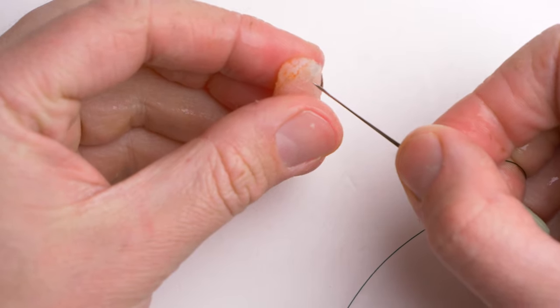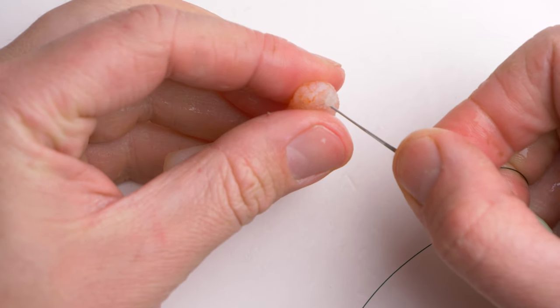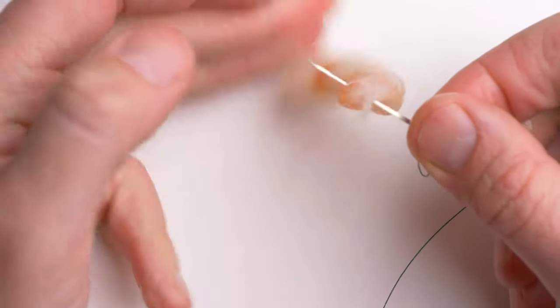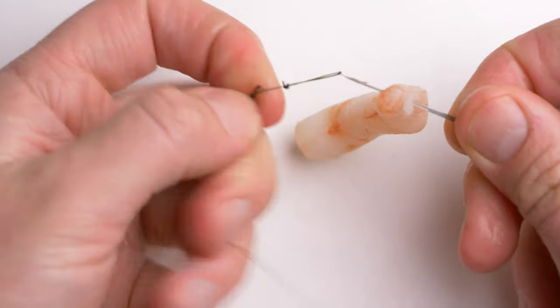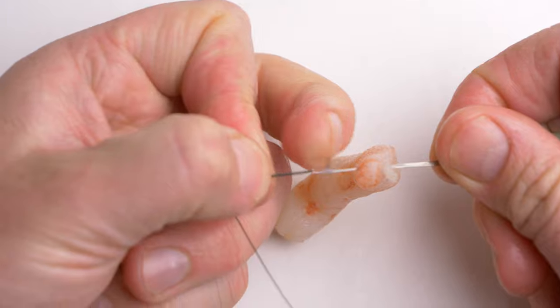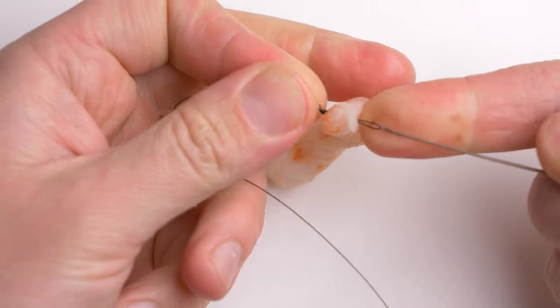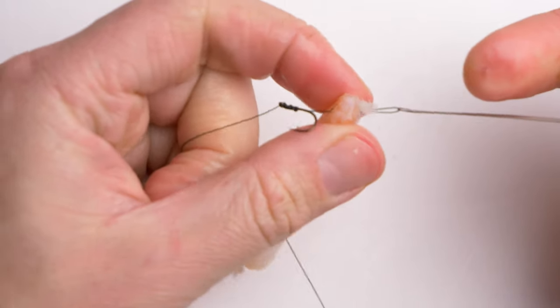All you do is take a latch needle, and then you put the needle through the end just like that. Then you pull the hair rig through the mesh.